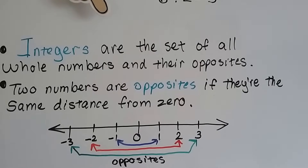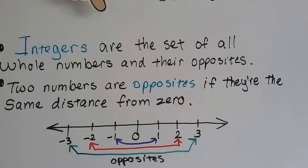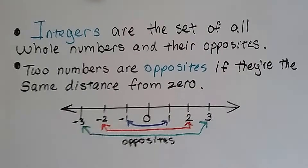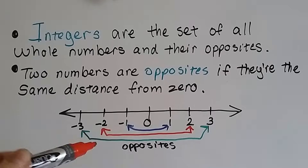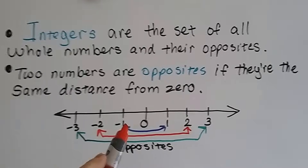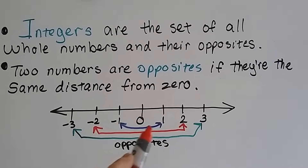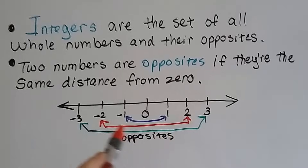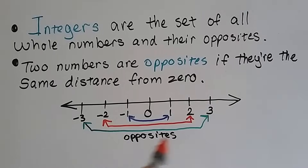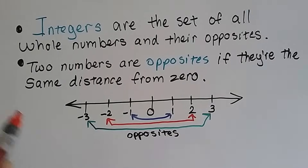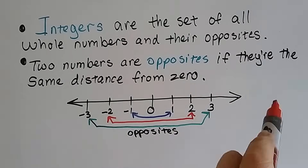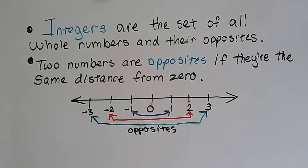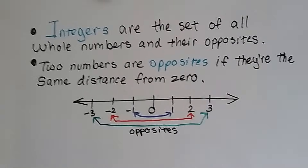Two numbers are opposites if they're the same distance from zero. So look at the blue, red, and green lines. Negative one is the opposite of one. Negative two and two are opposites. Negative three and three are opposites. Negative 99 and positive 99 are opposites. It's just the plus and the minus.